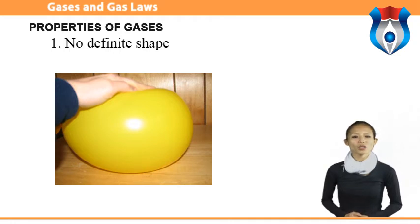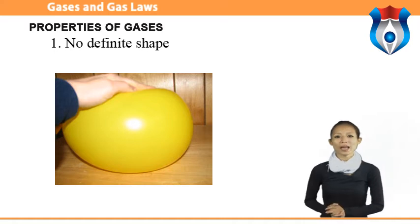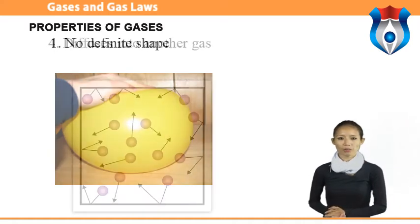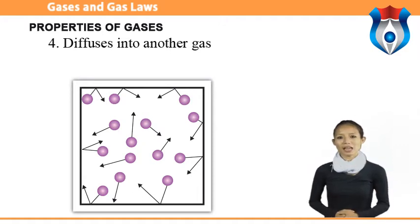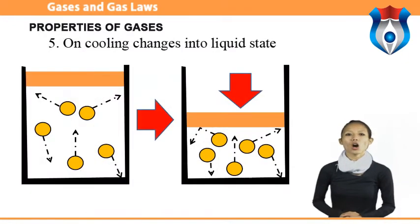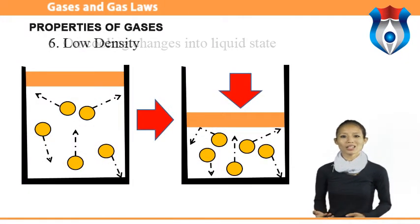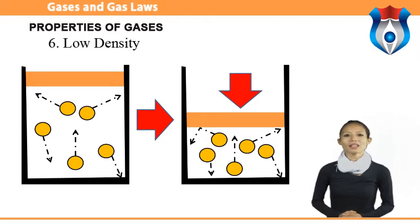A gas is not rigid and is easily compressed. Intermolecular separation is very large in the gaseous state, which can be decreased by applying pressure. A gas can diffuse into another gas because molecules in a gas move very fast, and hence the speed of diffusion is very large. A gas on cooling changes into a liquid state. Gases have low density — they contain scattered molecules dispersed across a given volume and are therefore less dense than in their solid or liquid states.